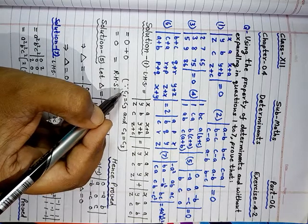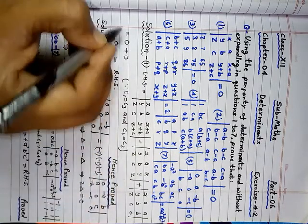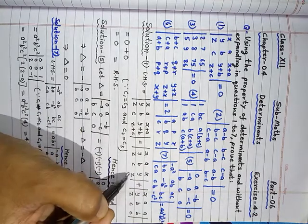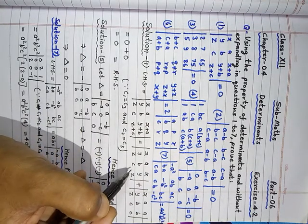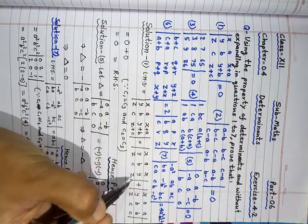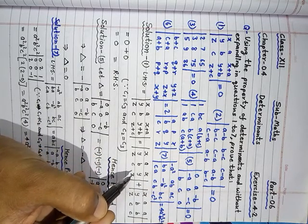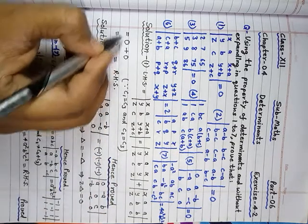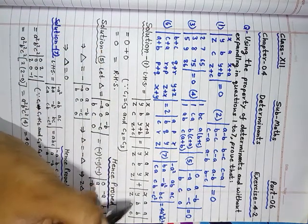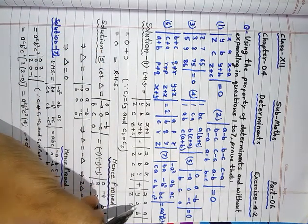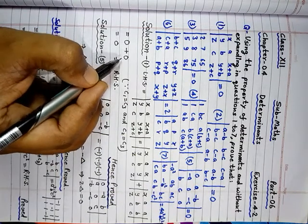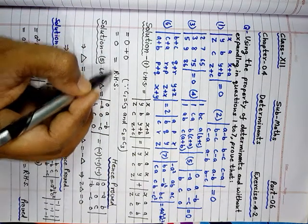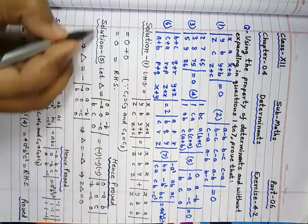Reason of first determinant to be 0 is c1 is equal to c3. And by property, if any determinant having equal rows or columns, then the value of the determinant is 0. So this determinant will be 0 and same as this determinant is also 0. And the sum of 0 is equal to RHS and hence proved.